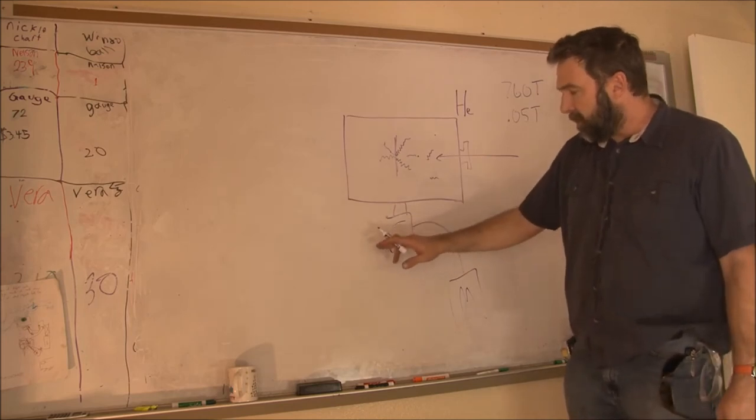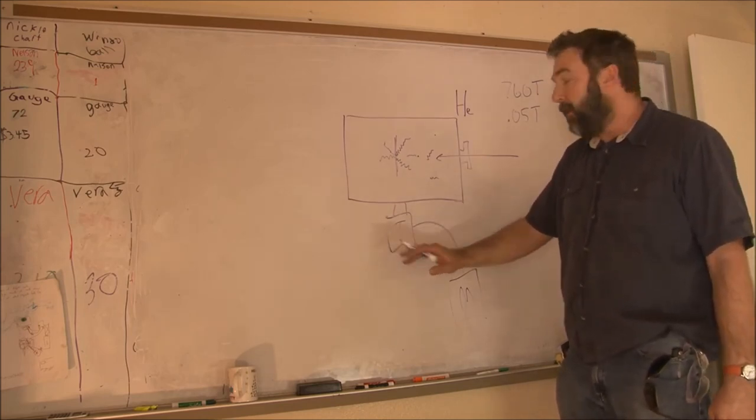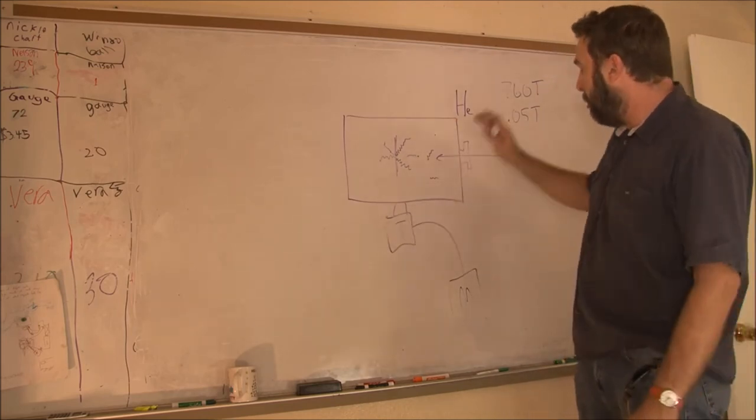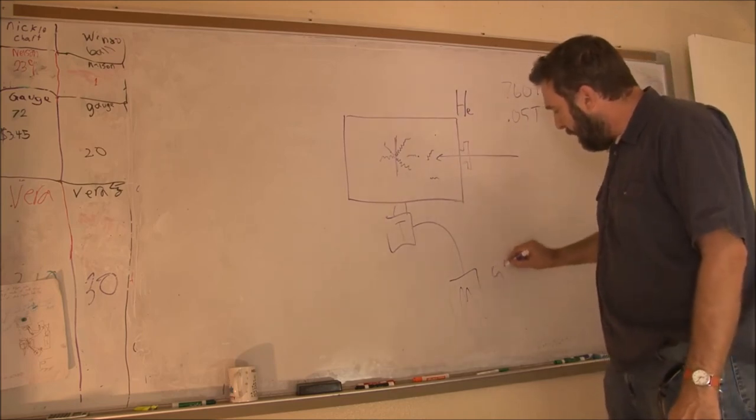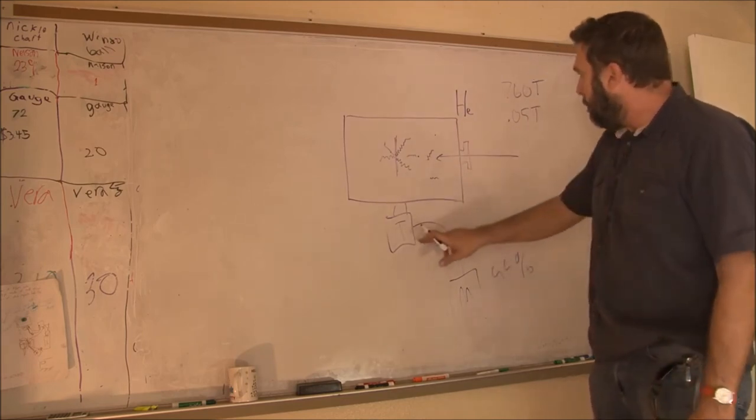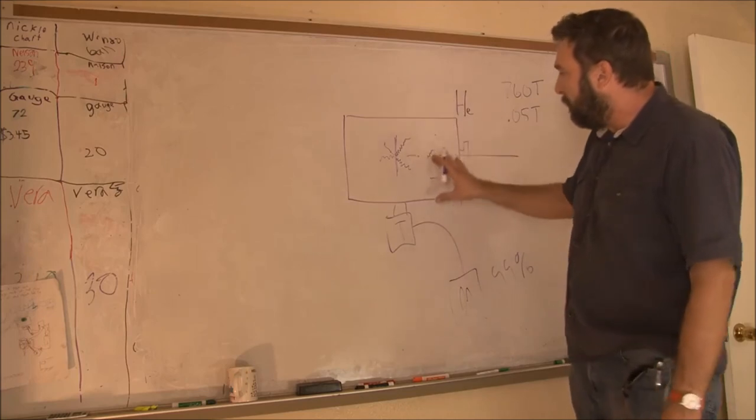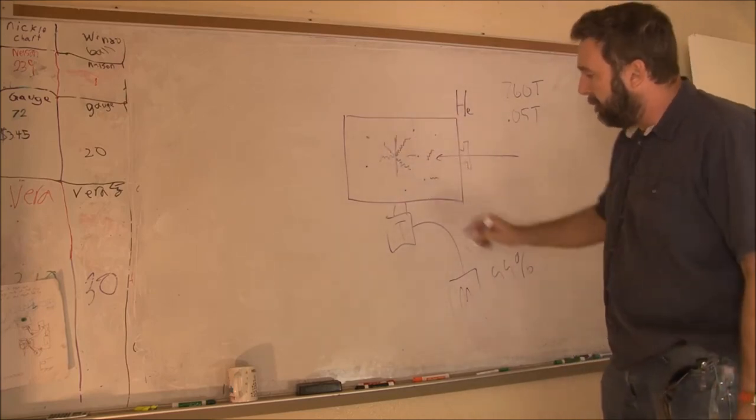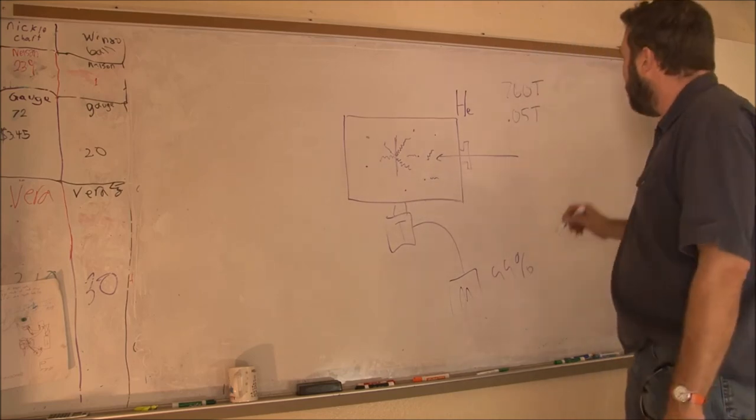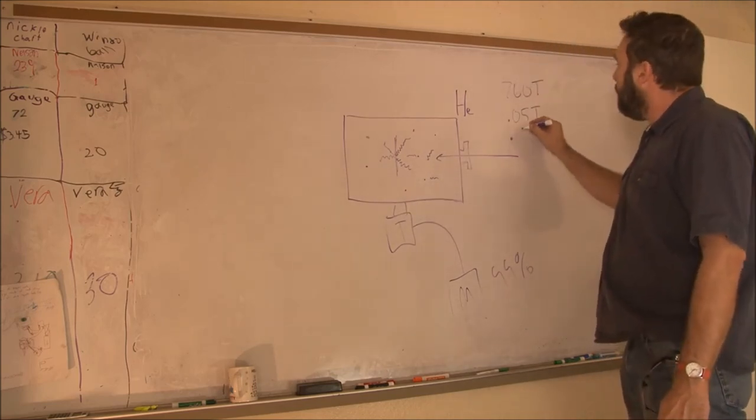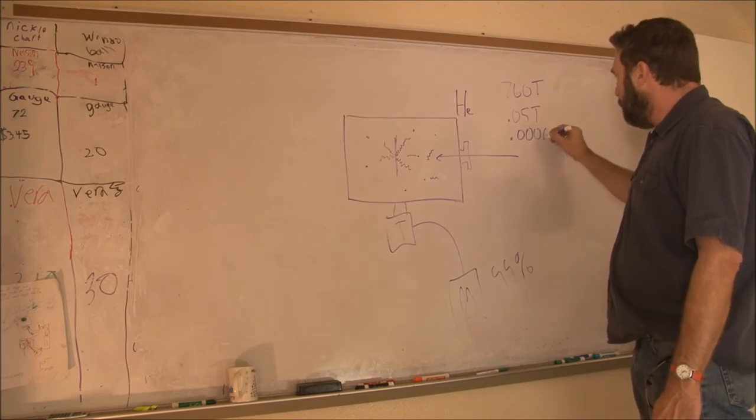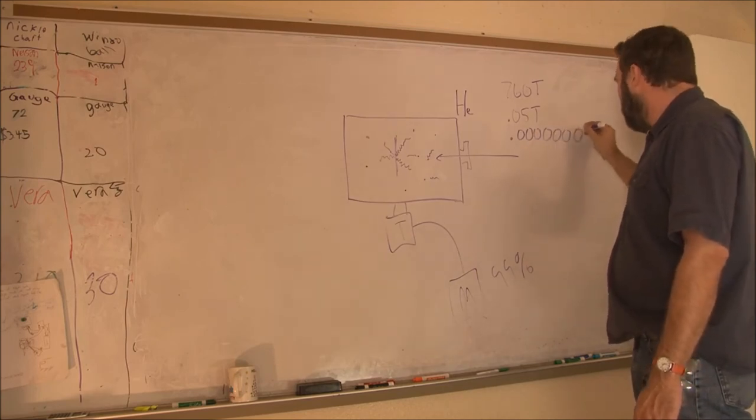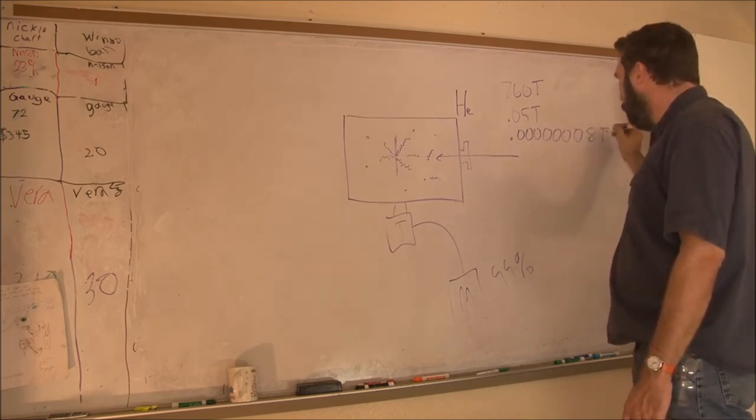Then Carmen will turn on this guy here - a turbo molecular pump. This will take out what's left. The roughing pump took out 99% of the air. This is going to take out most of what's left. These few atoms and molecules still floating around, the turbo pump is going to grab them and shoot them out. That will take it down to 0.0000008 torr.